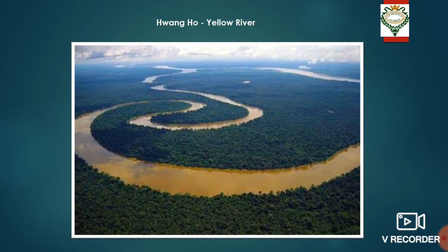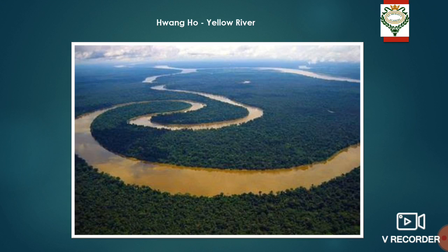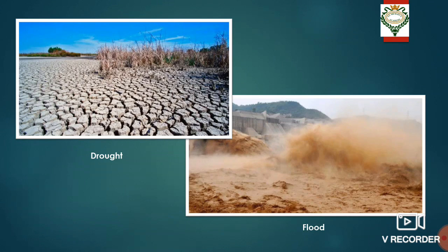By this time, you already know that in ancient times, the Chinese farmers settled along the middle and lower reaches of the Wangho River, as these regions were clear of woods. Though the area was fertile, the life of the people there was full of hardships — for these two reasons: drought and flood.